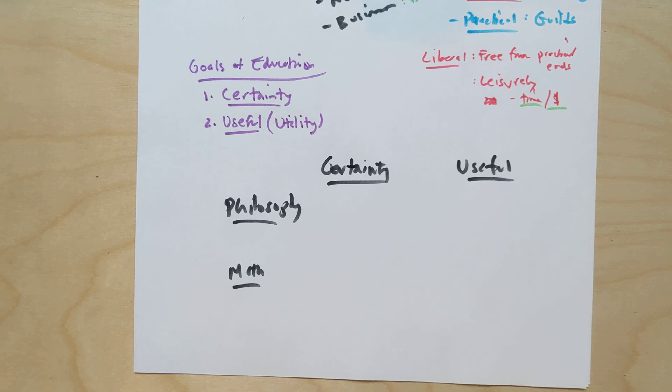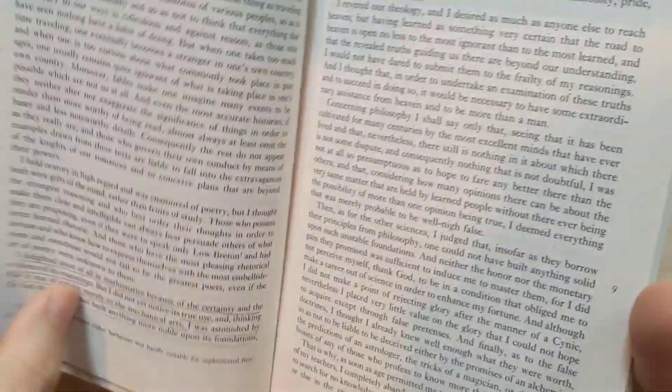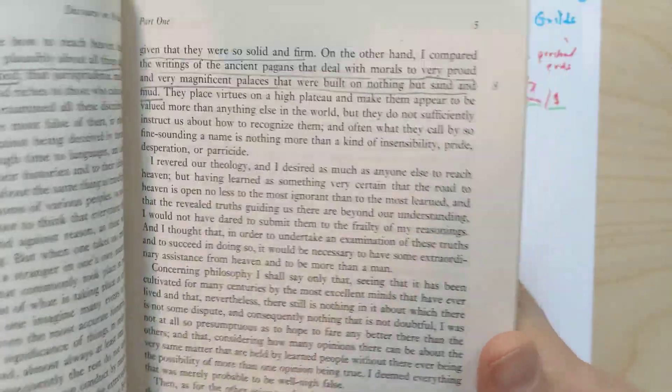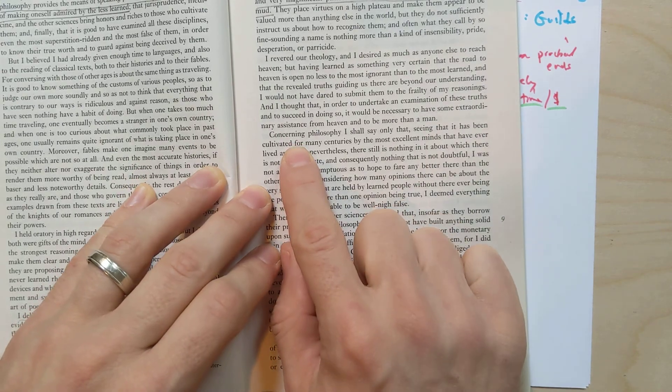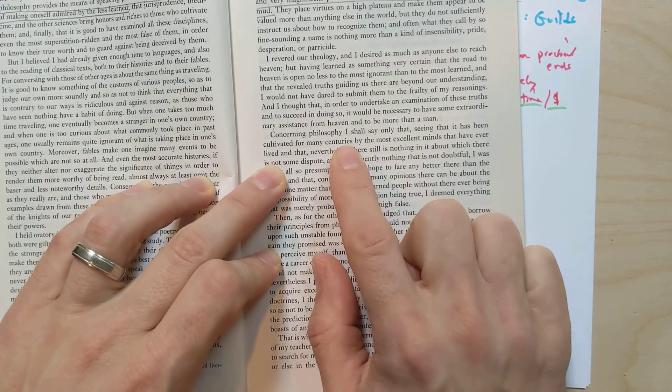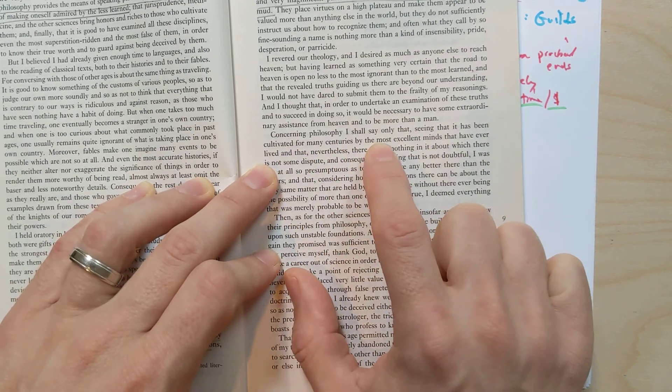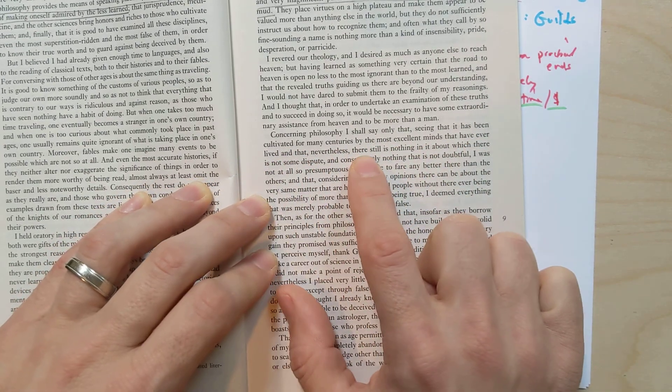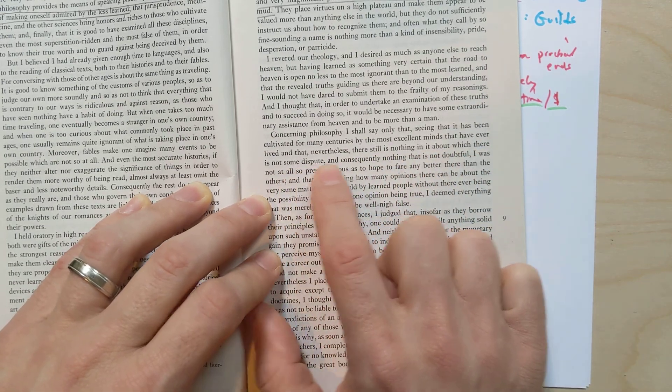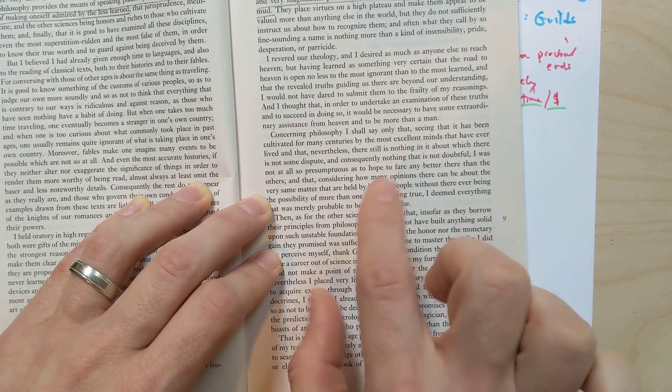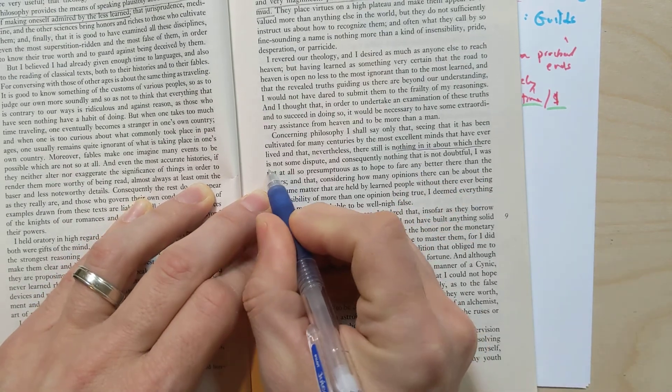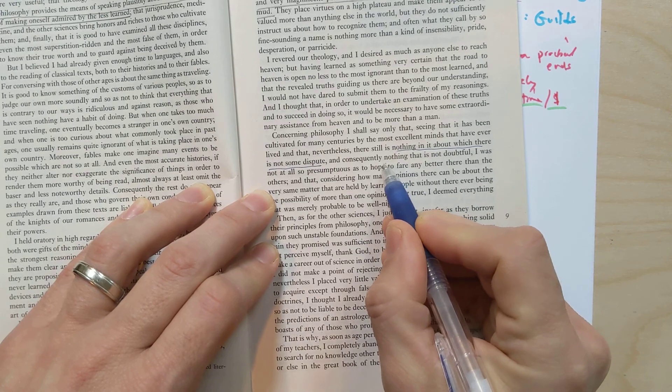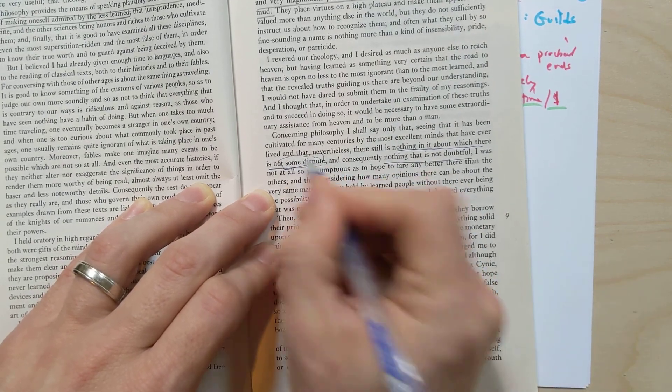And so we're going to just look at a couple of spots here in the Discourse on Method. So first, we're going to open up here to page five. Here, we're going to see Descartes talking about the kind of certainty that you get in philosophy. And he says, concerning philosophy, I shall say only that seeing that it has been cultivated for many centuries by the most excellent minds that have ever lived, and that nevertheless, there is still nothing in it about which there is not some dispute. Notice he says there, there's nothing in it about which there is not some dispute, and consequently, nothing that is not doubtful. There's nothing that is not doubtful because there's always some dispute.